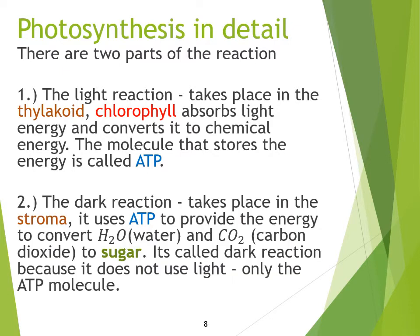Then there's the next process: at the stroma — in between the thylakoid or granum layers — it takes those ATP molecules and combines water and carbon dioxide together to make sugars or carbohydrates. This is called the dark reaction because it doesn't use sunlight directly. We already used the sunlight for creating the ATP molecules. Now in the dark reaction, we're taking the ATP molecule and using the energy to combine water and carbon dioxide to make our sugar.